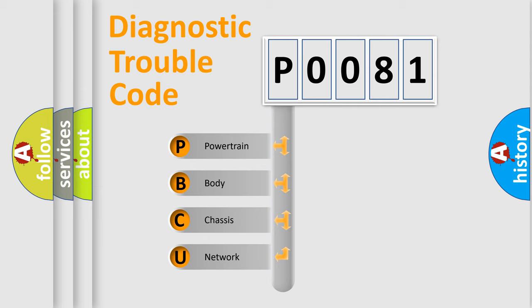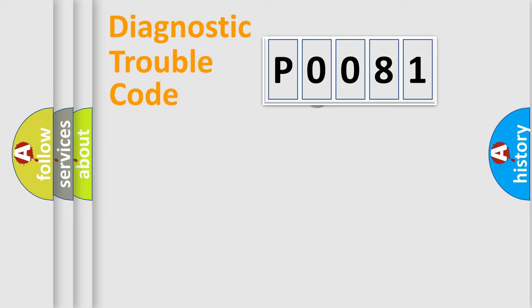We divide the electric system of automobile into four basic units: Powertrain, Body, Chassis, and Network. This distribution is defined in the first character code.